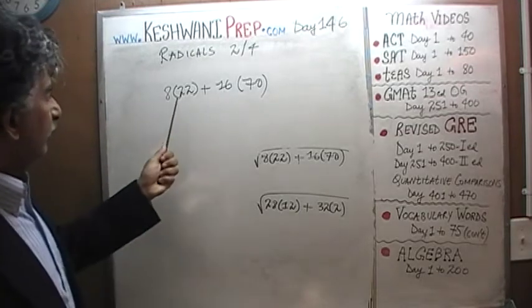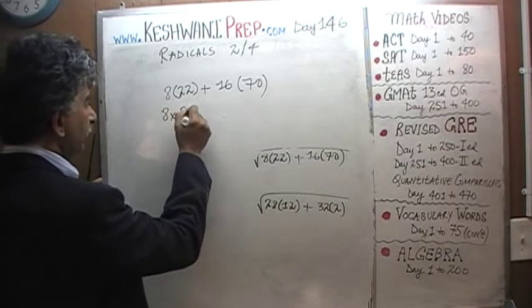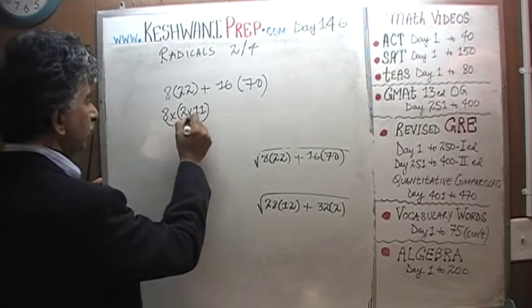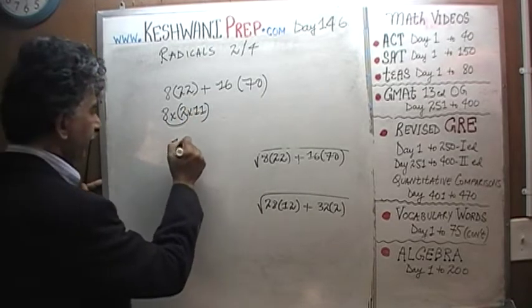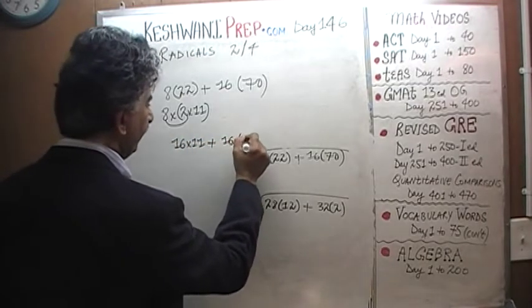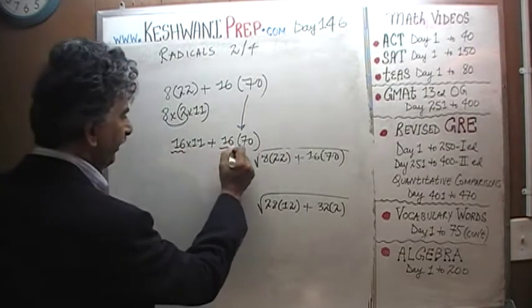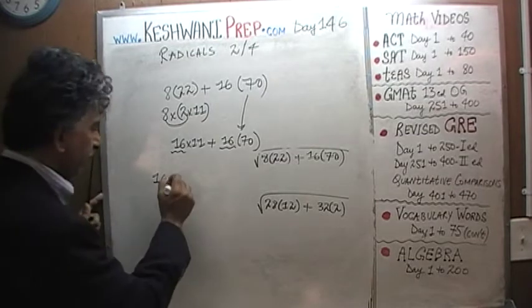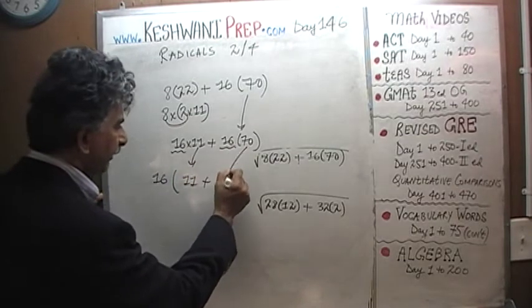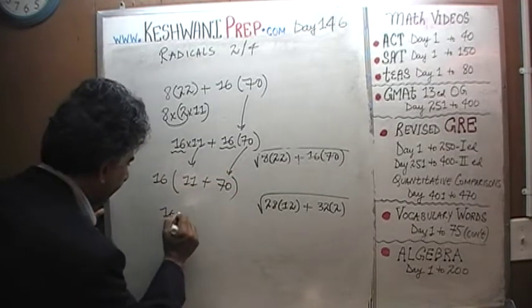So here is our 16. We have to get a 16 here. Why don't we write 22 as 2×11. And now 2×8 is 16. We get √(16×11) + √(16×70). Now we can get 16 as a common factor. Take out 16 as a common factor. Once we do that, from here we are left with 11. And from the second term, we are left with 70.